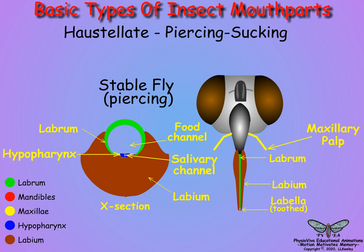In stable flies, tsetse flies, and horn flies, the biting structure is the labium, which ends in hard plates called the labella, that are toothed for forcing through the hide or epidermis of host animals.